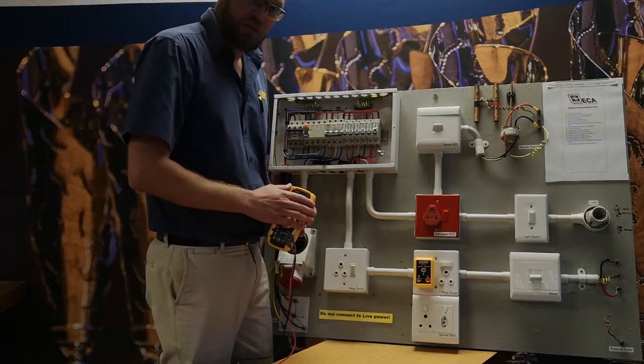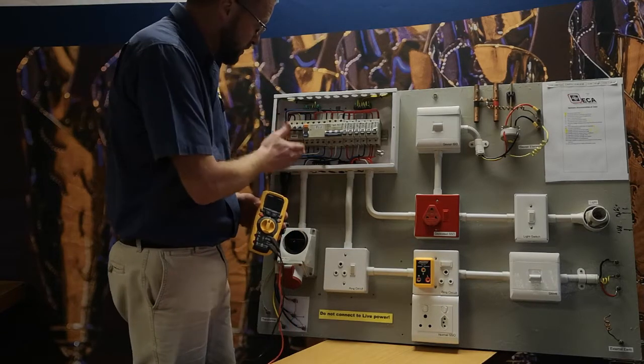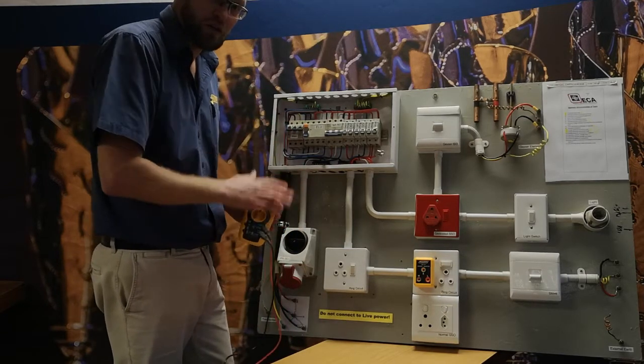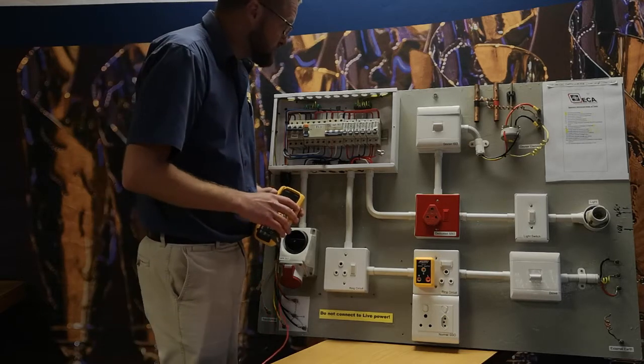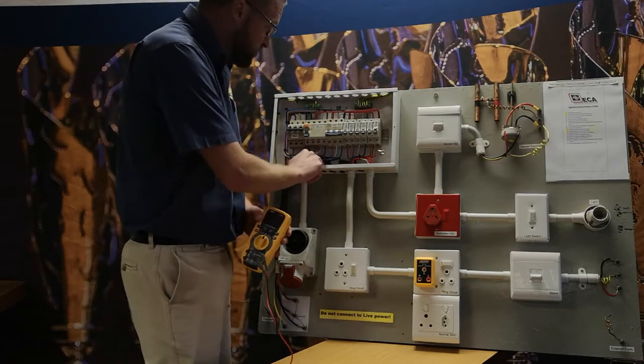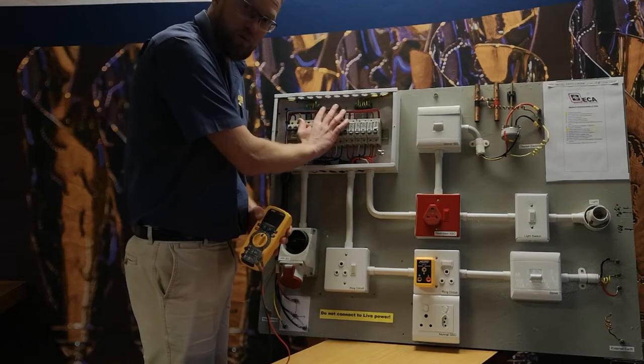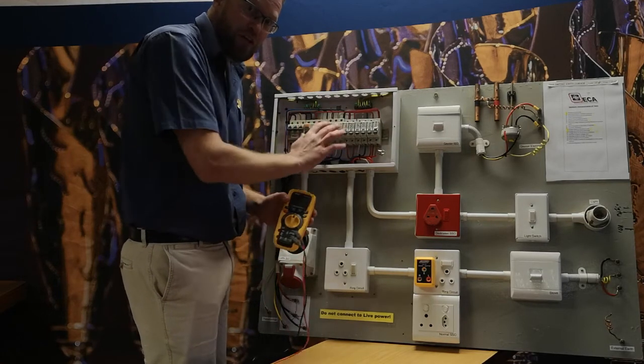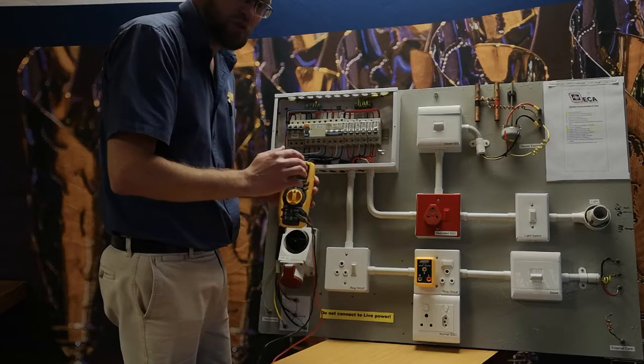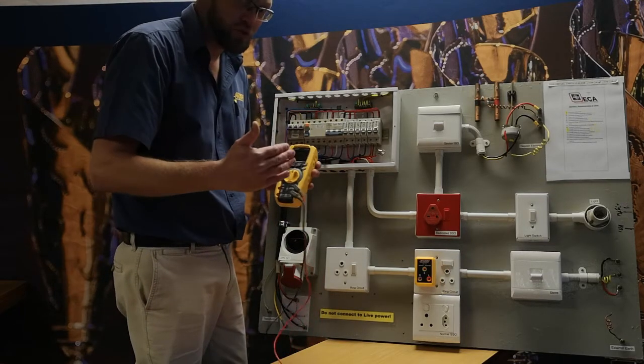The next test is elevated voltage on your incoming main neutral. Most guys make the mistake of testing between your neutral and your earth bar in your main DB. They're both connected to the same point in your installation, so you won't pick up any differentials there or any voltage.